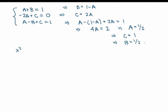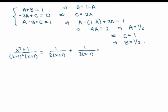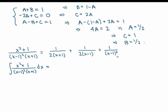Combining all that together, I get the partial fraction decomposition of my original rational function. The A term corresponds to x plus 1, the B term to x minus 1, and the C term to the squared factor. Now that we have the partial fraction decomposition, the integral becomes the sum of three simpler integrals.